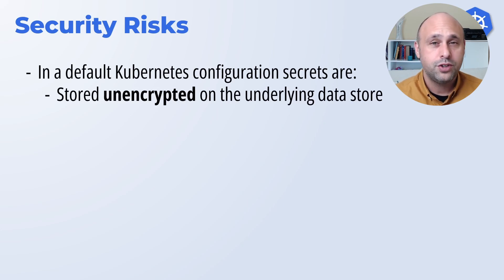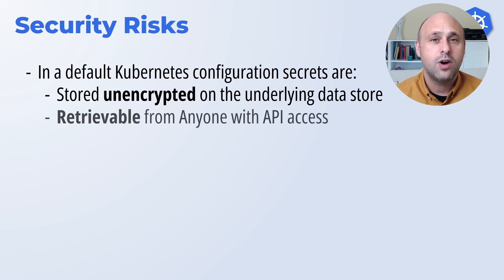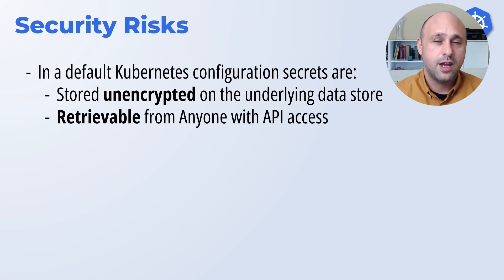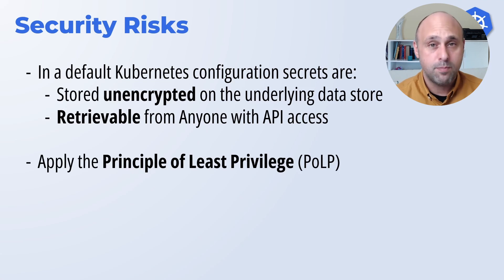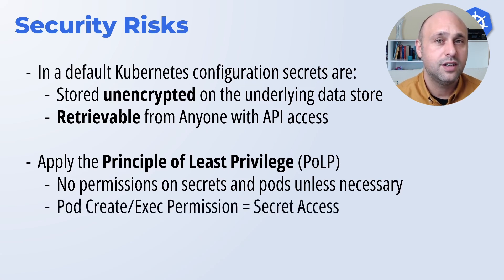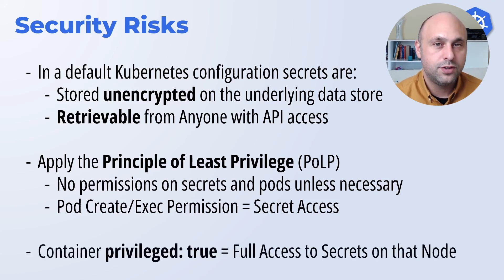Before we start looking at the automation options, I need to warn you about some security risks. In a default Kubernetes configuration, secrets are stored and encrypted on the underlying data store. If you don't configure RBAC on the API, anyone can access, retrieve, and modify those secrets. Enabling RBAC is not enough — you need to apply the principle of least privilege. Anyone with the authority to create pods or execute commands on pods can extrapolate secrets from your cluster. The risk is even bigger if the pods are privileged, because that access can be used to escape to the node where they are running, and at that point anyone can steal secrets and anything sensitive. I will cover these issues in another video.